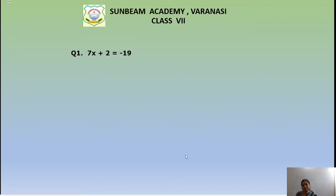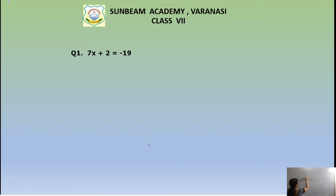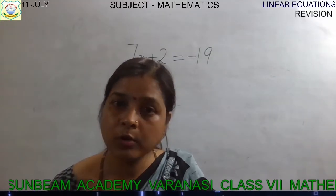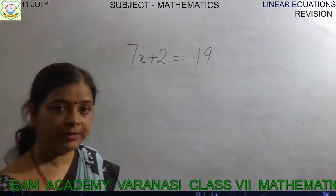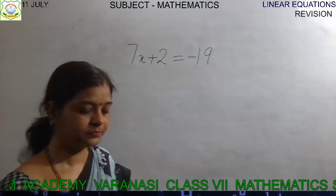Solve the value for x and then tell me the answer. Try to solve it in your copy and then match it with my answer. I am also writing it on the board: 7x + 2 = -19. We will separate the variable term on one side and the constant term on the other side. I am waiting for you — just solve it.